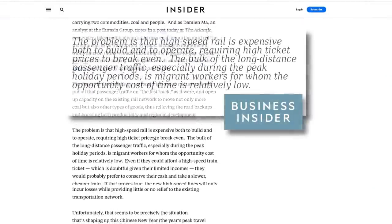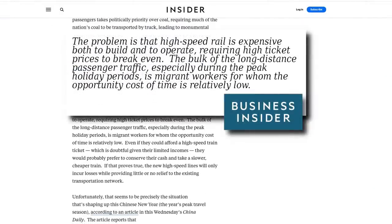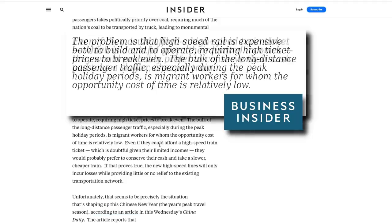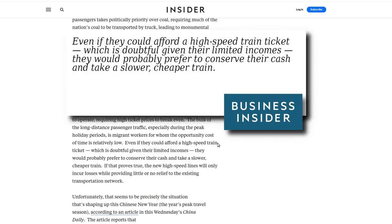It says here, the problem is that high-speed rail is expensive both to build and to operate, requiring high ticket prices to break even. The bulk of the long-distance passenger traffic, especially during the peak holiday periods, is migrant workers for whom the opportunity cost of time is relatively low. Even if they could afford a high-speed train ticket,